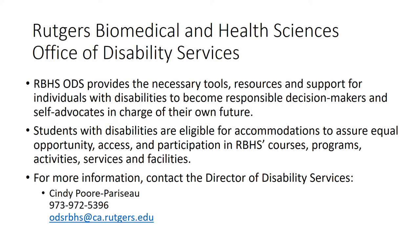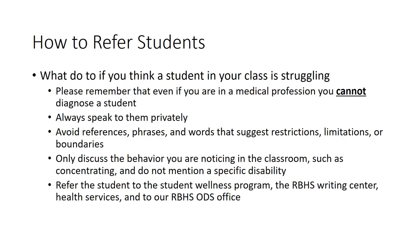Our office is located at the Bergen Building on 65 Bergen Street in Newark. If you ever have any questions or concerns regarding a student with a disability or a student you may think has a disability, please contact our director at 973-972-5396 or by the email listed on this slide. If you have a student who you feel is struggling in certain aspects of your class — such as writing, answering questions orally, or if they often miss class — it could be for a variety of reasons. Students may be struggling due to family or personal issues, a disability, or they may just be having a bad day. If you have questions or concerns before you decide to refer a student, please contact our RBHS ODS office at 973-972-5396 or via email at odsrbhs@ca.rutgers.edu.